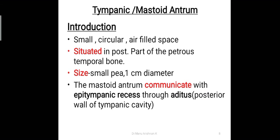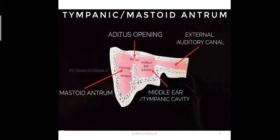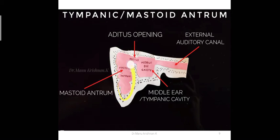While discussing the middle ear cavity, we covered the separate areas: epitympanic recess, mesotympanum, and hypotympanum. The mastoid antrum, a small circular air-filled space, communicates with the epitympanic recess through the aditus, which is present on the posterior wall of the tympanic cavity. This is the representation of the mastoid antrum — a cross-sectional image showing the bony covering and small circular air cells.